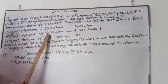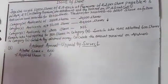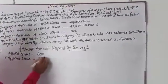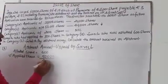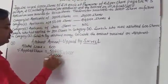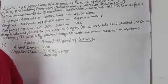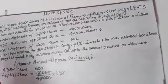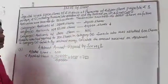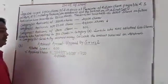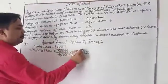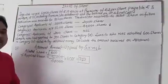Those who applied for 50,000 shares were allotted 40,000 shares. How to calculate applied shares? Simple: category B has 50,000 shares. I have already calculated — that is 750. So 750 is the number of shares applied by Suresh. One important thing: applied number of shares is always more than allotted number of shares.